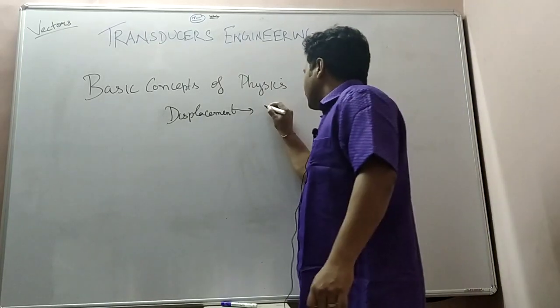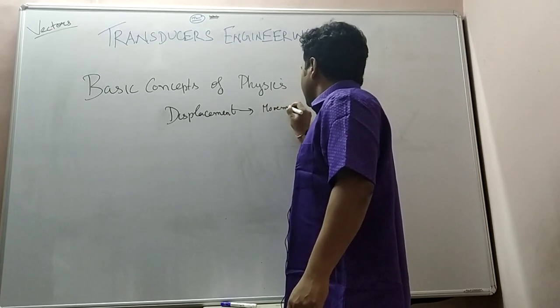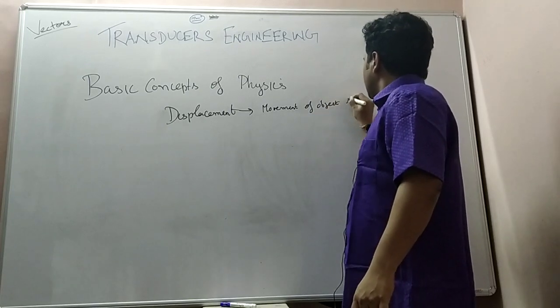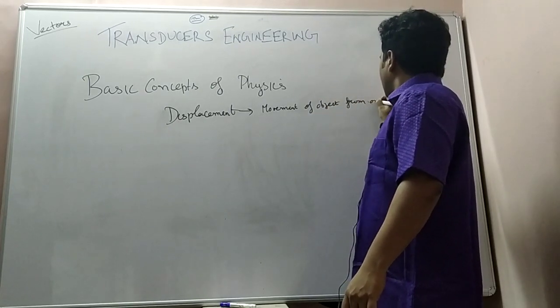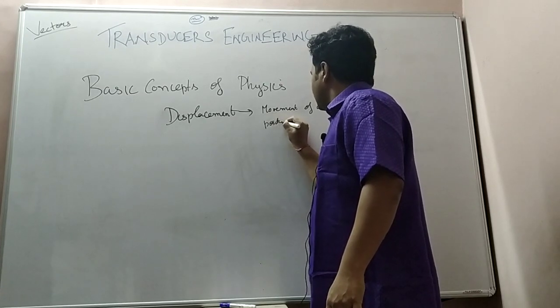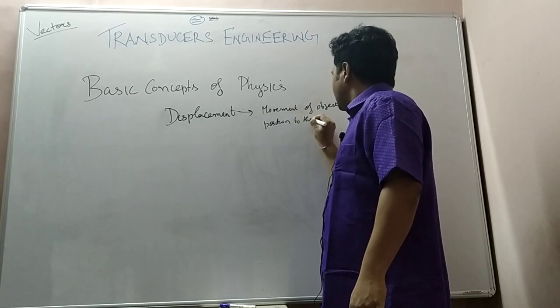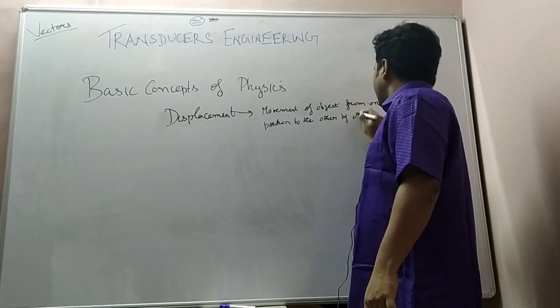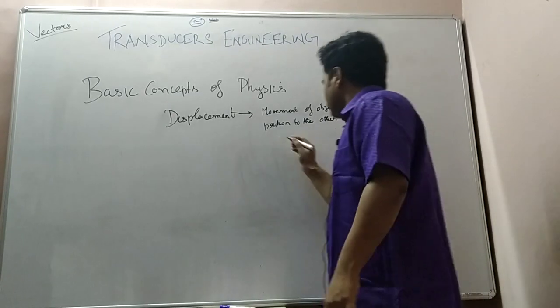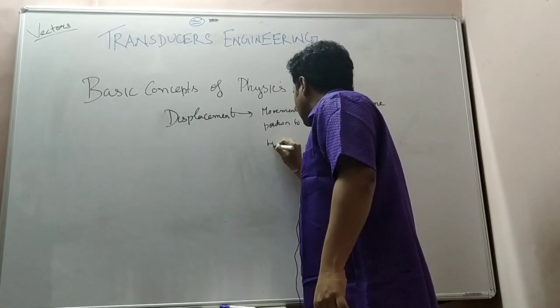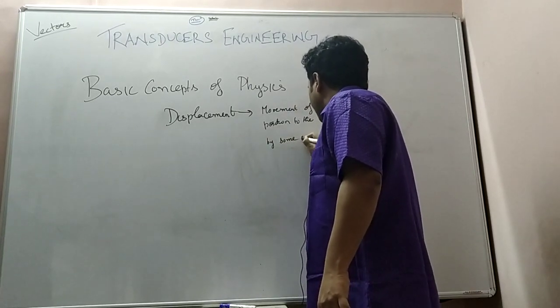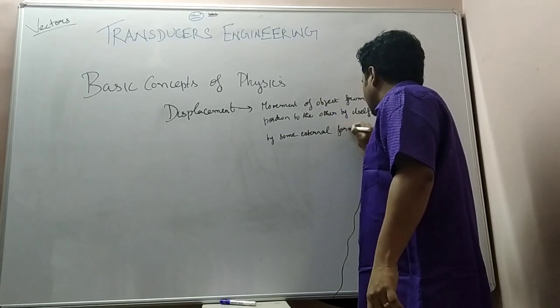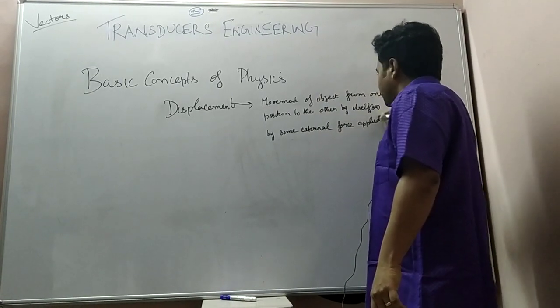For example, first I'll write the definition: movement of object from one position to the other by itself or by some external force applied. This is called as displacement.